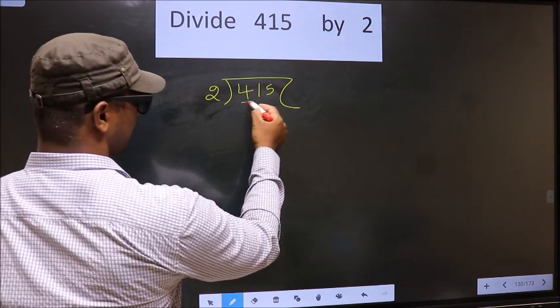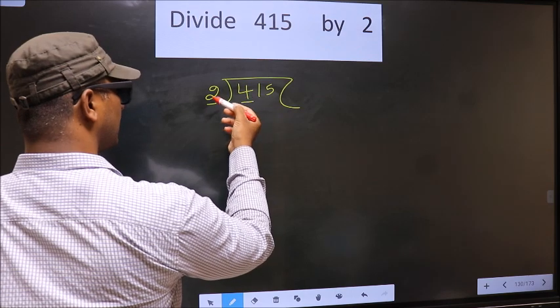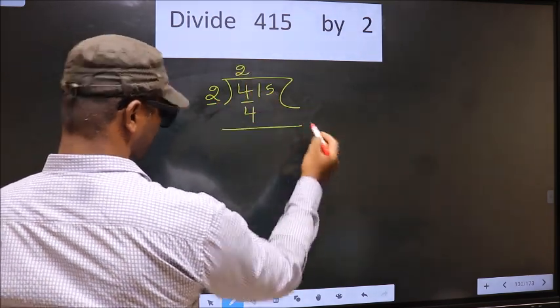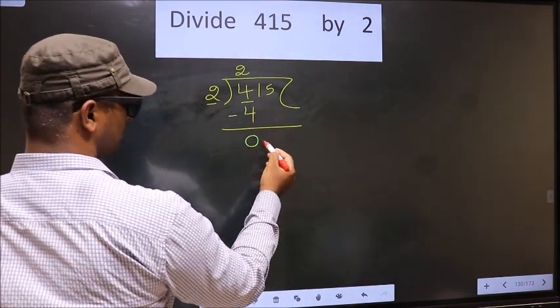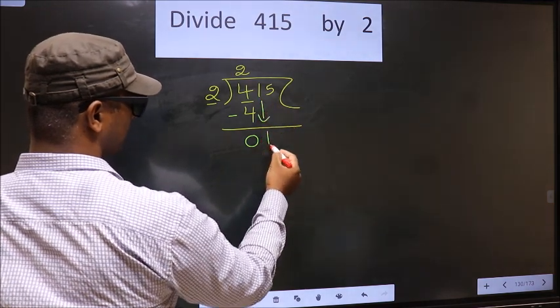Now here we have 4, here 2. When do we get 4 in the 2 table? 2 times 2 is 4. Now you subtract: 4 minus 4, 0. Now bring down the beside number, so 1 down.